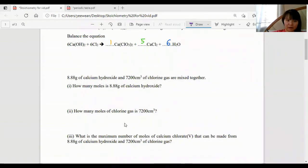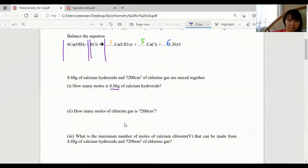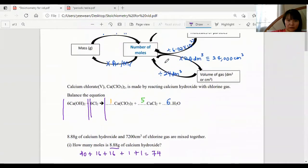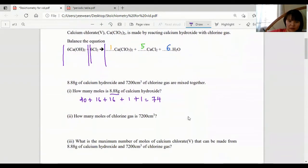Let's look at this question. 8.88 grams of calcium hydroxide, so they gave us the mass, and 7200 centimeter cubes of chlorine, that's in volume, are mixed together. How many moles is 8.88 grams of calcium hydroxide? First, we need its MR. Ca is 40, O is 16, and H is 1. Mass over AR or MR is number of moles. So 8.88 divided by 74, that's 0.12.